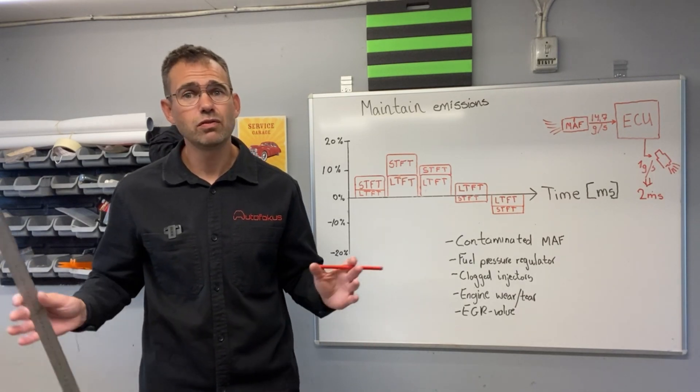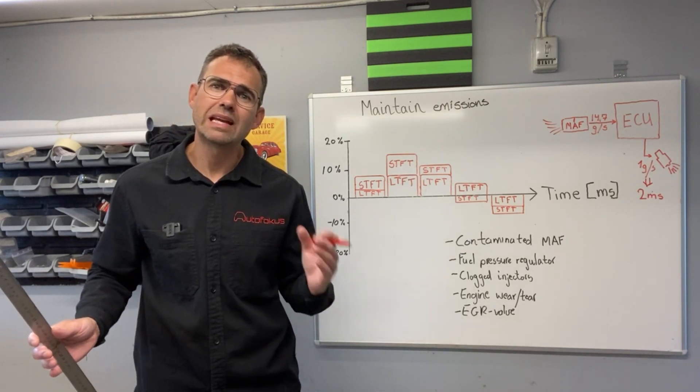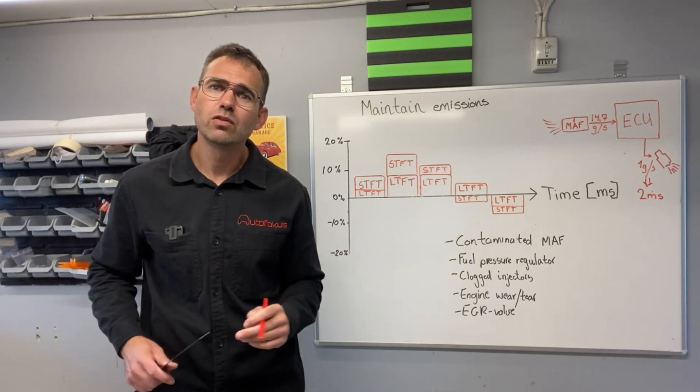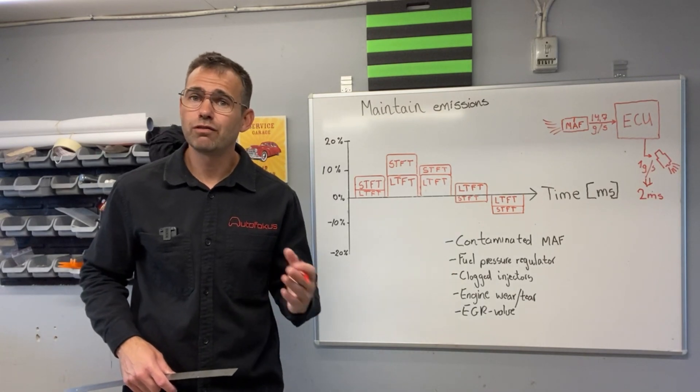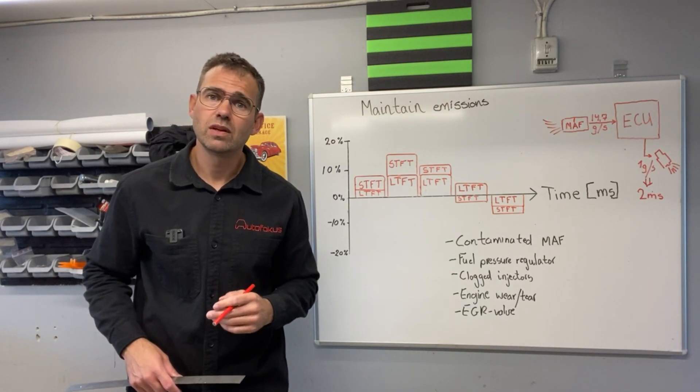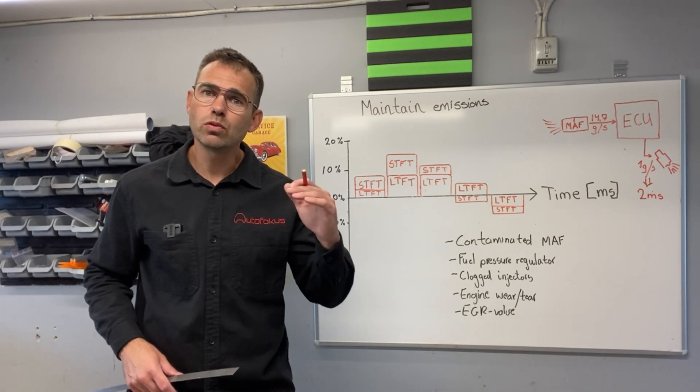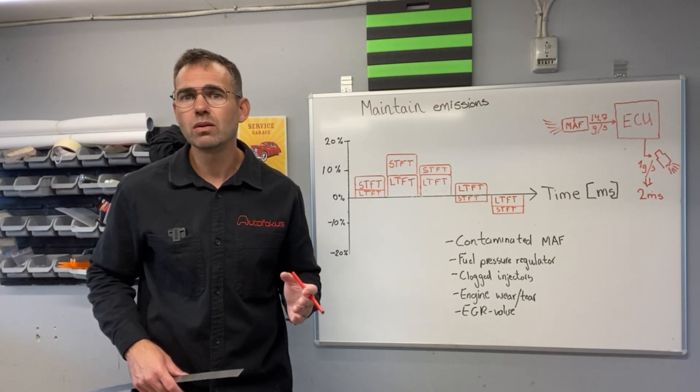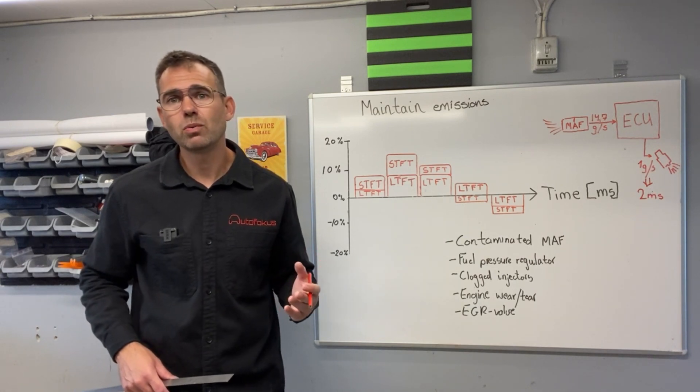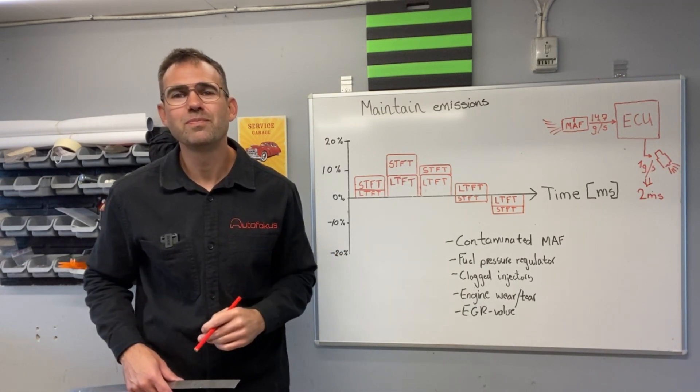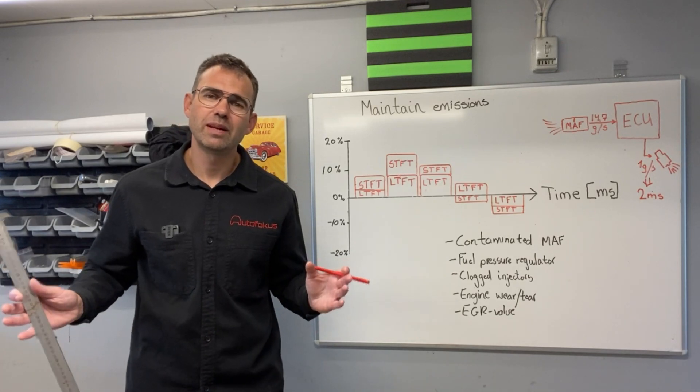The other half is the fuel trims. The fuel trims is what reacts on that measurement to ensure that the right air-fuel ratio is achieved. In most cases and in many engine loads, it's going to be lambda 1, which will be 14.7 to 1, the stoichiometric ratio.